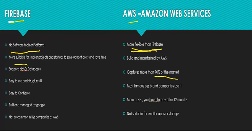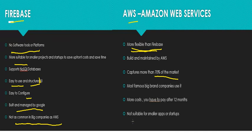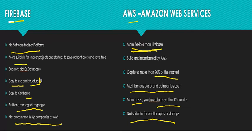Firebase is easy to use with a structured UI and easy configuration. It's built and managed by Google but is not as common in big companies as AWS. AWS is not as suitable for smaller startups — you don't want to pay those costs after 12 months or spend time configuring everything. It has much higher costs after the initial free 12 months, and most big brand companies use Amazon Web Services.